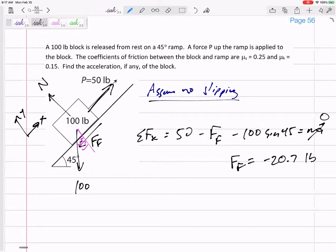Negative 20.7 pounds. Why did I get a negative? Yeah, I just drew it the wrong direction. Many times if you draw force of friction the wrong direction, your answer will come out negative and you'll realize, oh, I drew it the wrong direction.